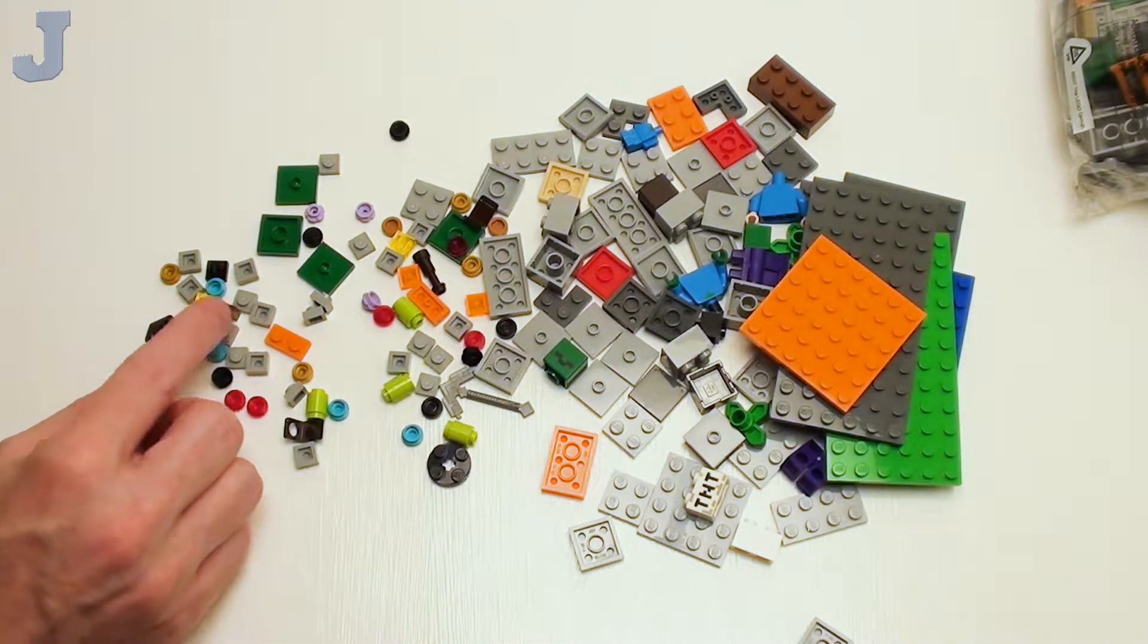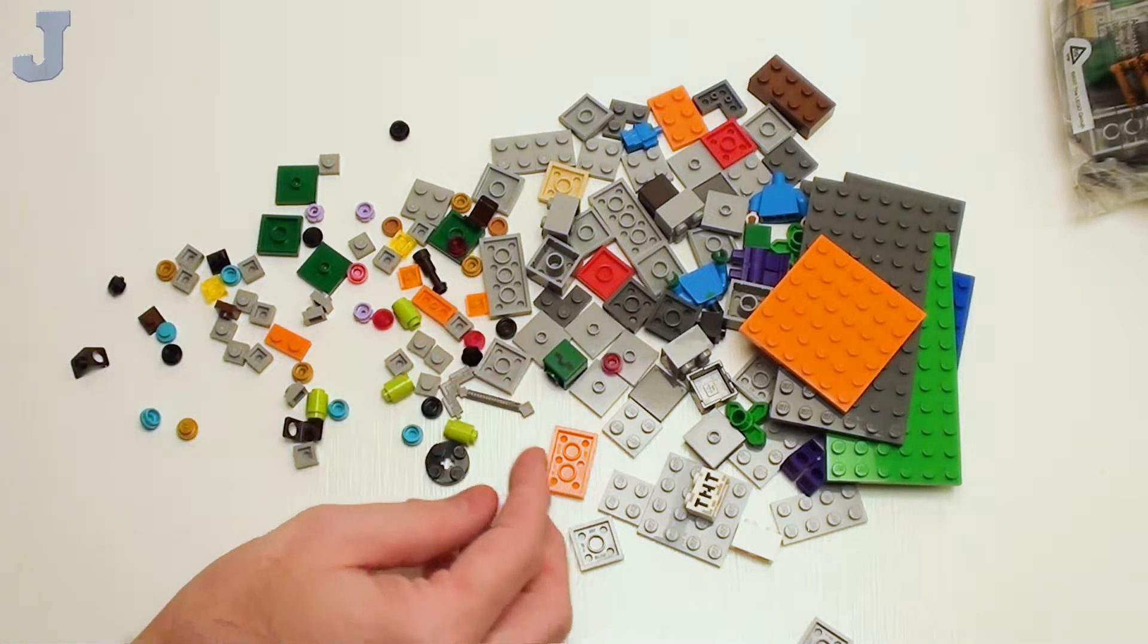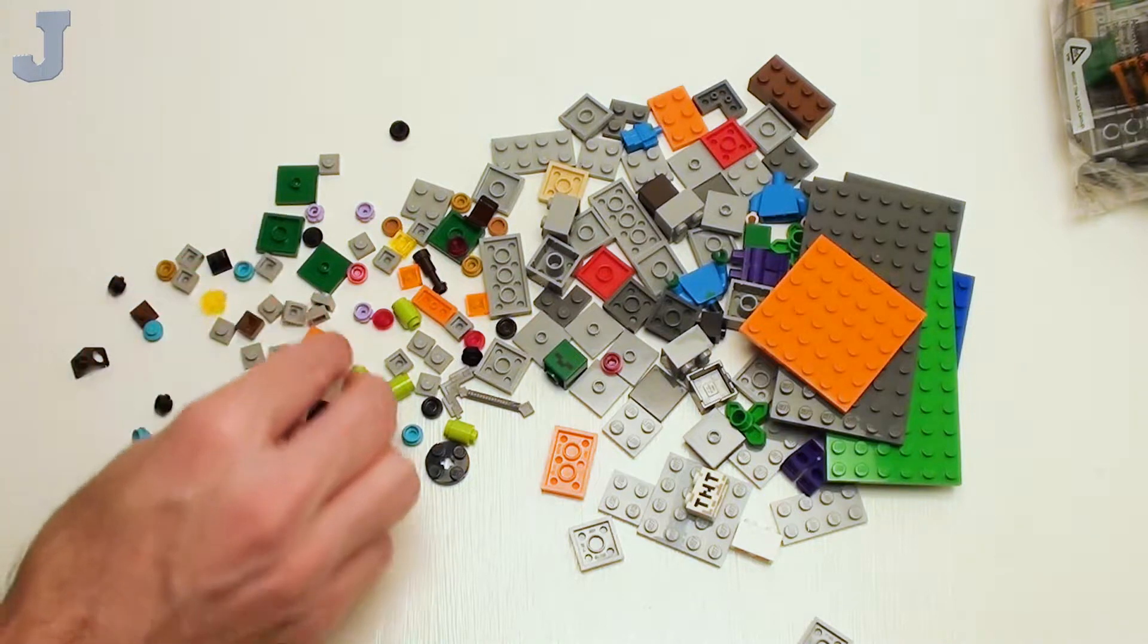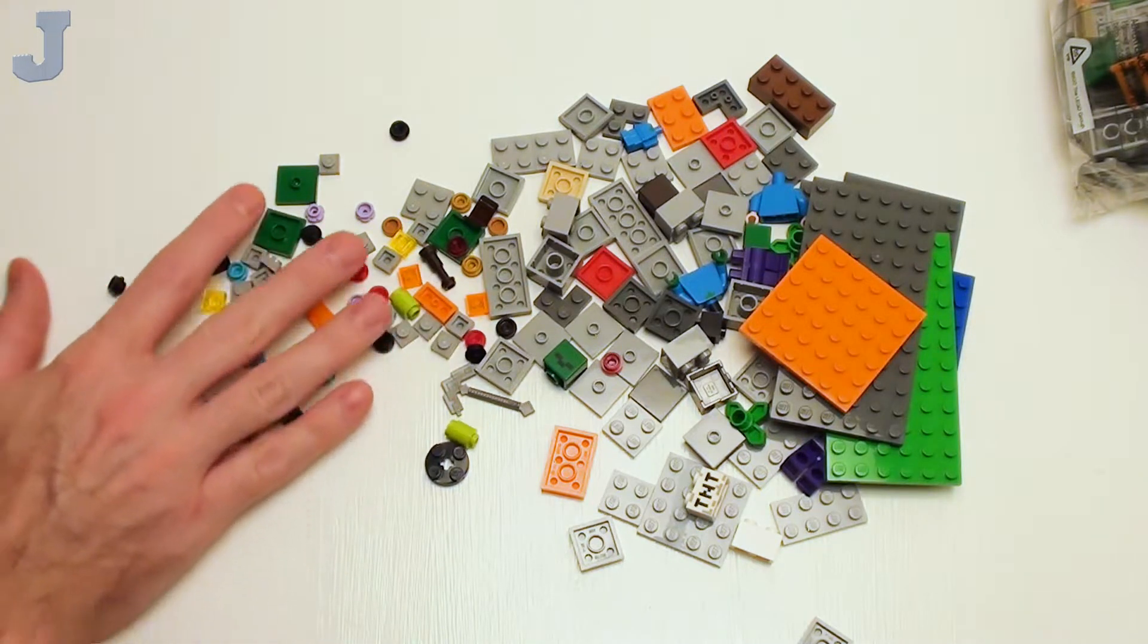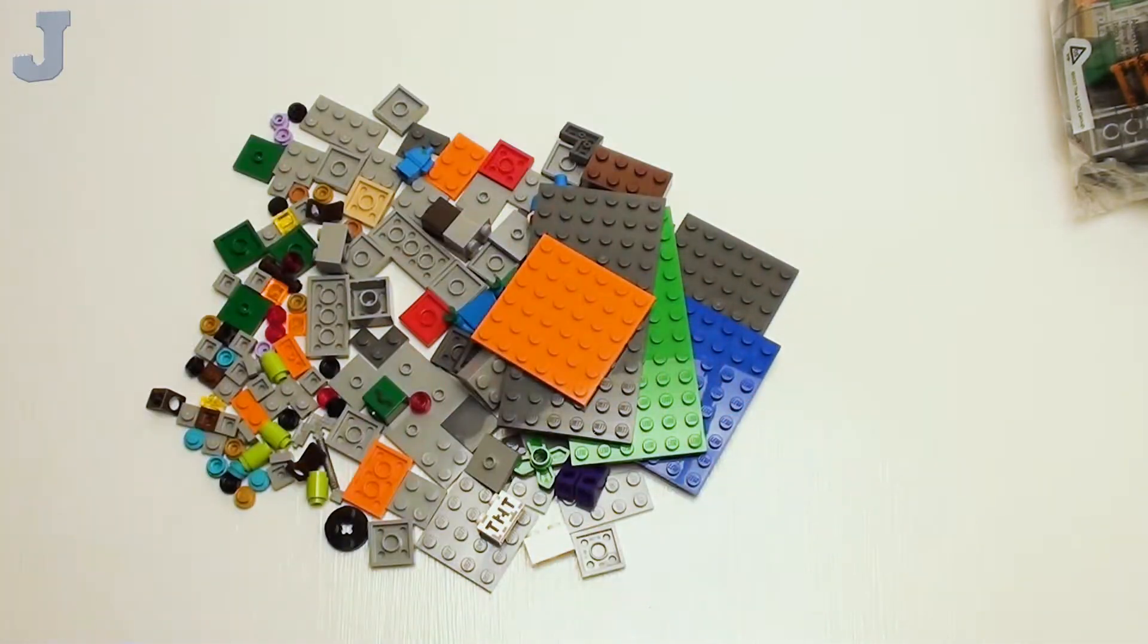And some stud flowers. Got some transparent orange and yellow 1 by 1 plates. Just basically small odds and ends. I've got some transparent red studs. Yeah, they're typical stuff.